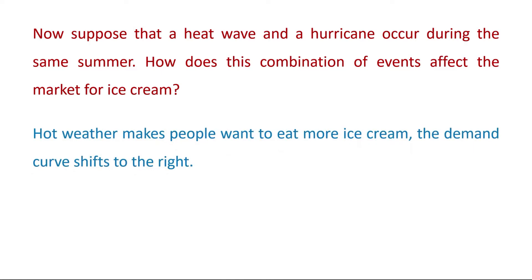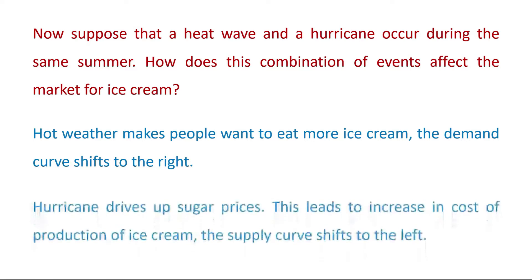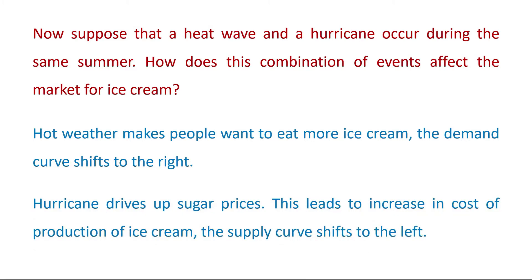Hot weather makes people want to eat more ice cream, thus the demand curve shifts to the right. And a hurricane drives up sugar prices. This leads to an increase in cost of production of ice cream and thus the supply curve shifts to the left.